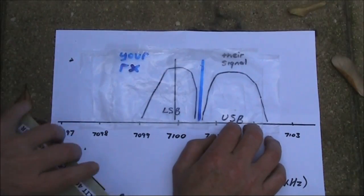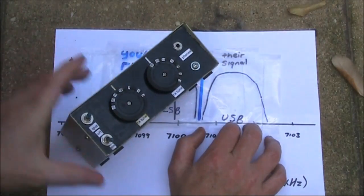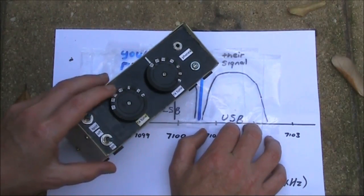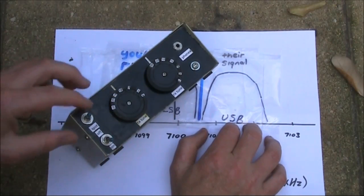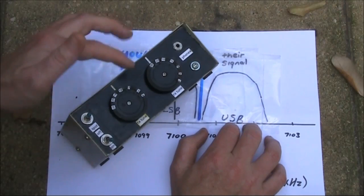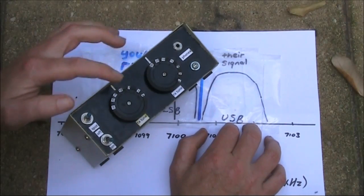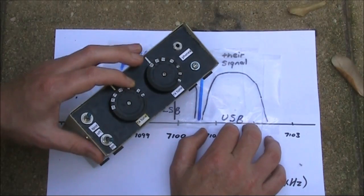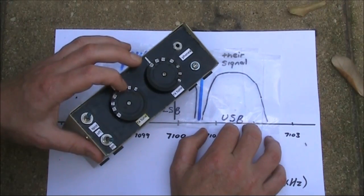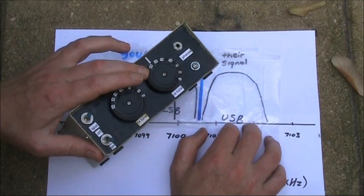What I did with this particular transceiver, which I called the Split 40, was I had two tuning controls, one for the receiver and one for the transmitter. I had a switch, or I think it is a relay, that switches, so it uses this one on transmit and this one on receive. So you could independently set the transmit frequency different to the receive.